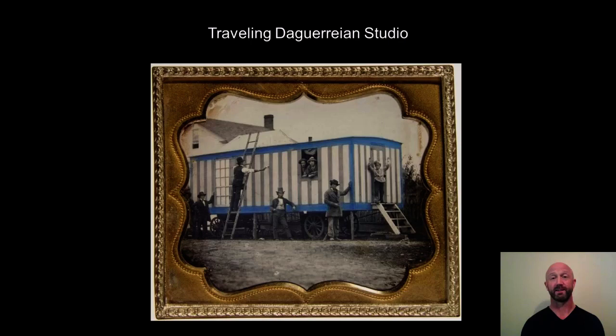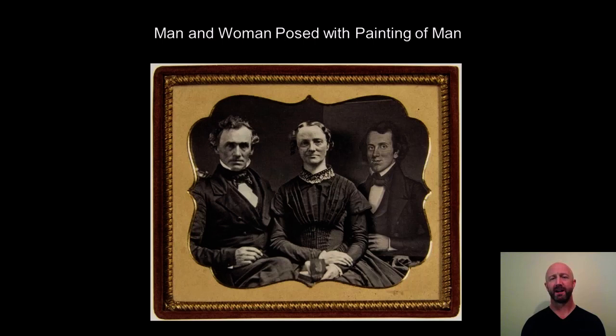Along with those big studios, there were also studios that traveled to try to corner the market in smaller cities around the United States. These traveling daguerreotype studios would come into town for a couple of weeks — probably along with a country fair — and everyone would show up to get their daguerreotype done. The daguerreotype was also used in ways you wouldn't think of today: to commemorate people who had passed. Here is a portrait of a man and a woman with a painting of a family relative who has since died — they stuck the portrait into the daguerreotype to include him.